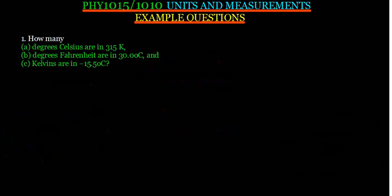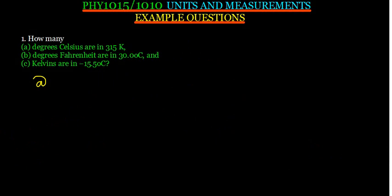How many degrees are in 315 Kelvin? We need to know the relationship between degrees and Kelvins. The temperature in degrees is given by the temperature in Kelvin minus 273.